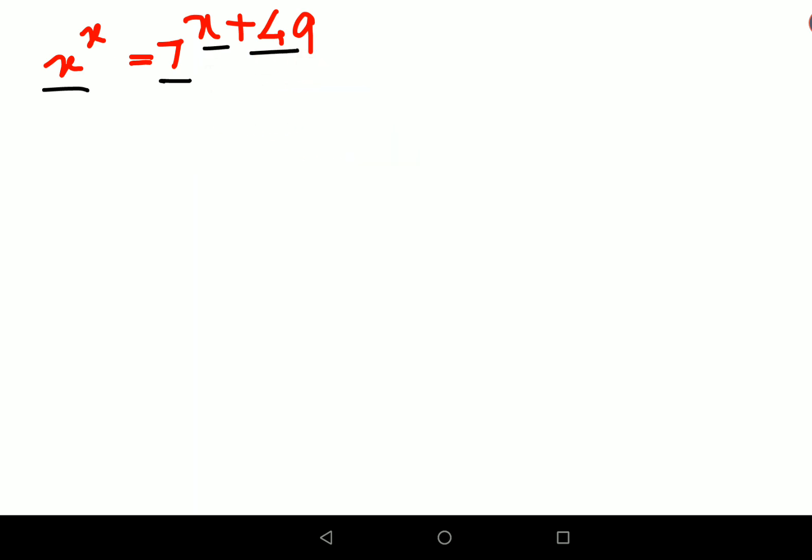Understand whenever you have something like this, we will keep x raised to x as it is. And a raised to m plus n can be written as a raised to m times a raised to n. So this can be written as 7 raised to x times 7 raised to 49.